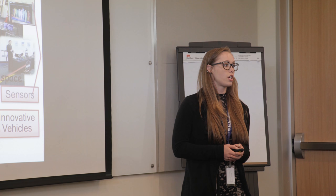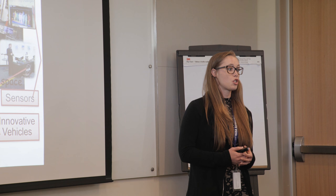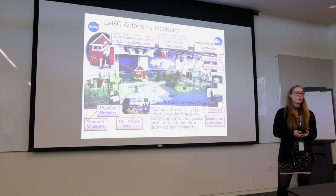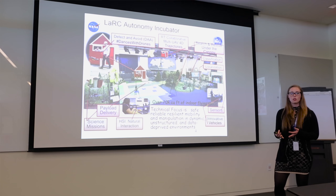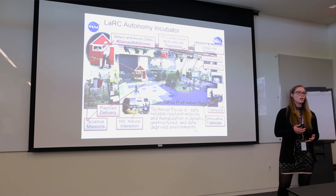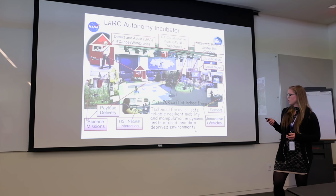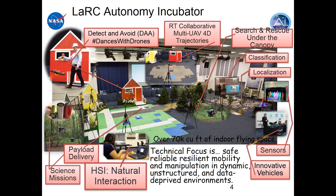I'll give a little background on the Autonomy Incubator so you can understand the motivation behind this objective and how it ties into the larger picture of the work we're performing. The technical focus is bringing safe, reliable, resilient, and autonomous manipulation into a dynamic, unstructured, and data-deprived environment. Basically, we're trying to bring unmanned aerial vehicles into an environment where they are still autonomous enough to operate even when deprived of information like GPS coordinates, or when the environment is changing or data is outdated. My part sort of marries natural human interaction with collaborative trajectory generation.